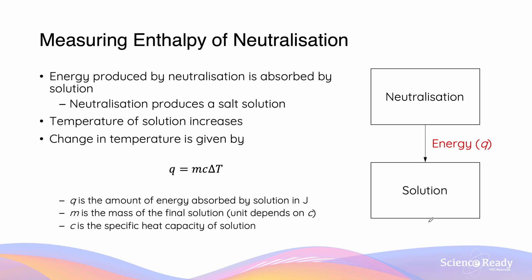The enthalpy of neutralization is the energy either released or absorbed from a neutralization reaction. The energy produced by neutralization is absorbed by the solution. For example, when HCl reacts with NaOH, we get NaCl salt and water, and all the energy produced is absorbed by that solution, causing the temperature to increase. A change in temperature, ΔT, helps us calculate Q — the quantity of heat absorbed by the solution in joules — using Q = mcΔT, where m is the mass of the final solution and c is the specific heat capacity.